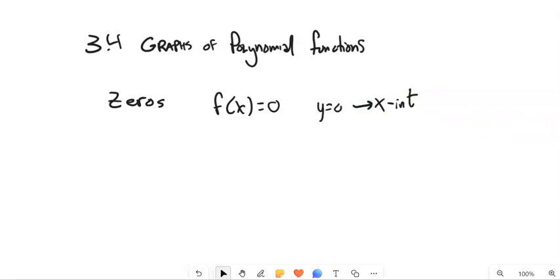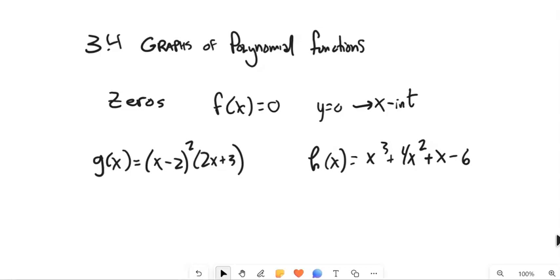So if I had something like g of x equals x minus 2 squared, get another one up here too. So how do I find them?